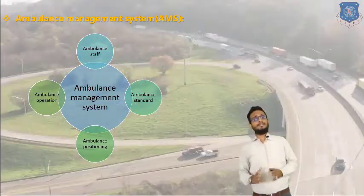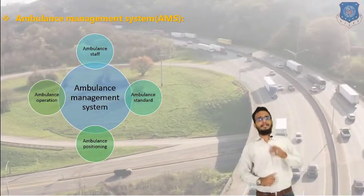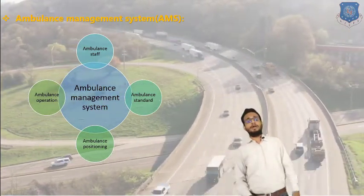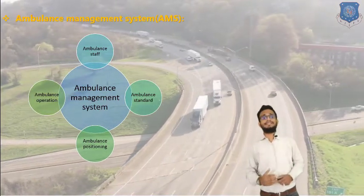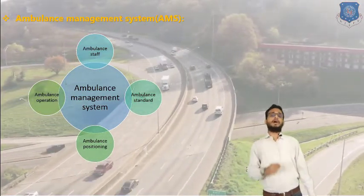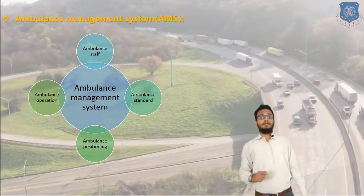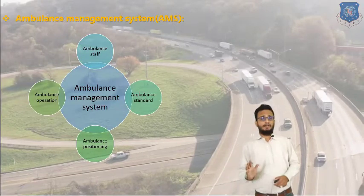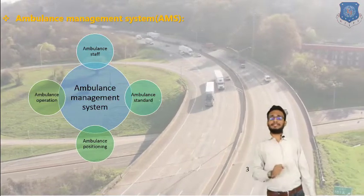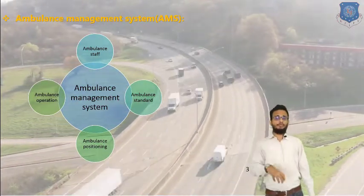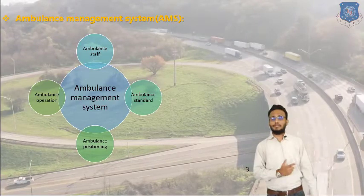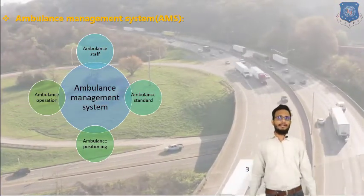Ambulances are properly designed with oxygen supply, basic amenity supplies, and first aid supply. These are the basic requirements of an ambulance, and ambulances are designed as per ambulance standards. The third pillar is ambulance positioning, which is a very important part. Many times we face situations where, due to delay of the ambulance, patients have died. So ambulance positioning is the most important task — we have to locate ambulances at preferable locations from which all corners of the city are easily accessible.